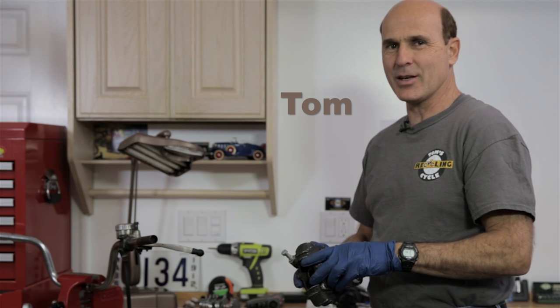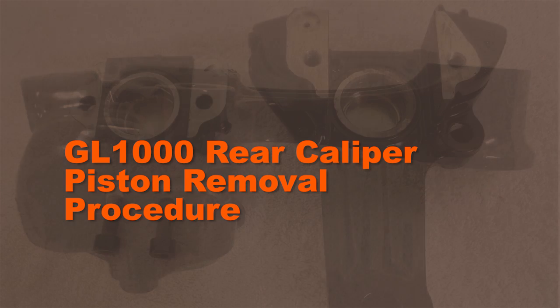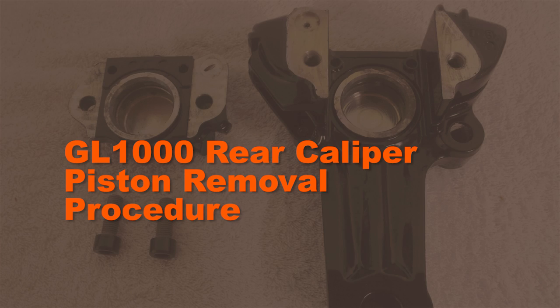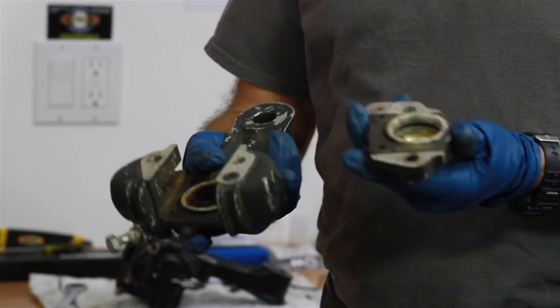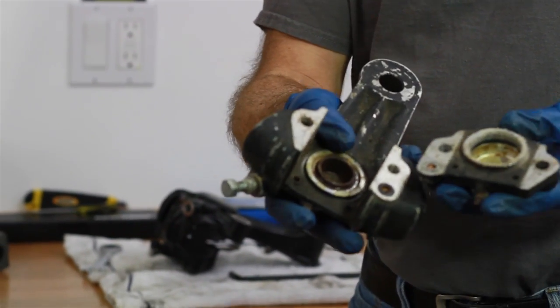Hi, this is Tom from Tom Cycle Recycling. I'm here today to tell you how to get the pistons out of rear caliper from a GL-1000 Goldwing. This caliper is also used on some other Hondas from that same time frame, so the same technique will apply to those.